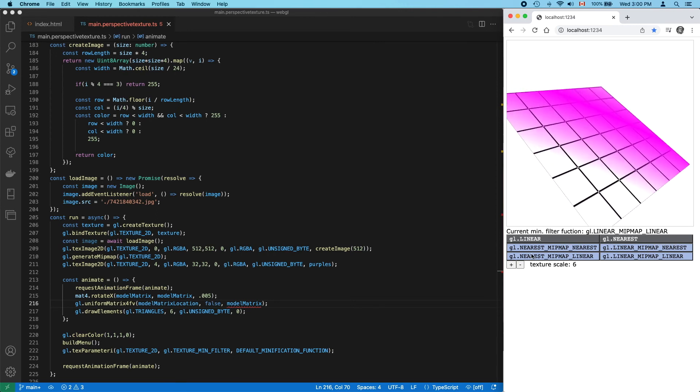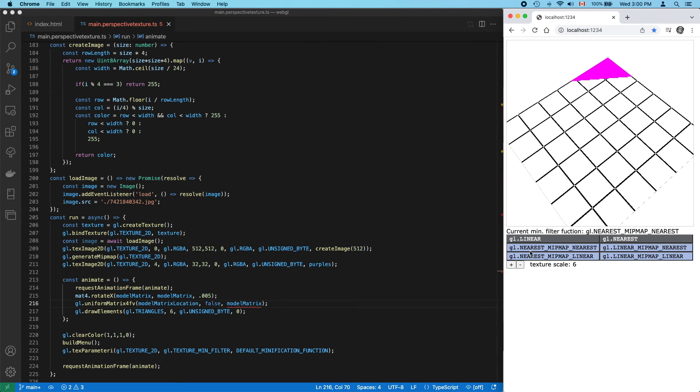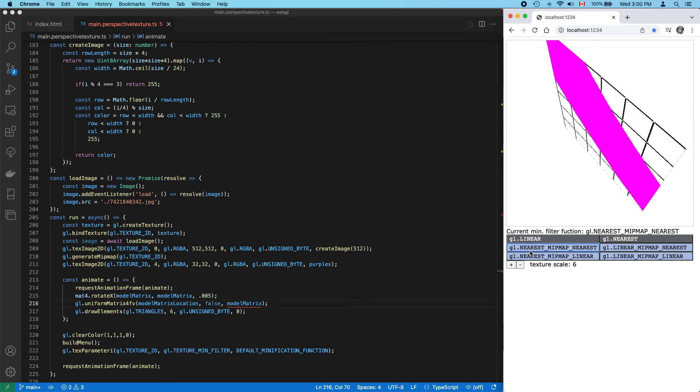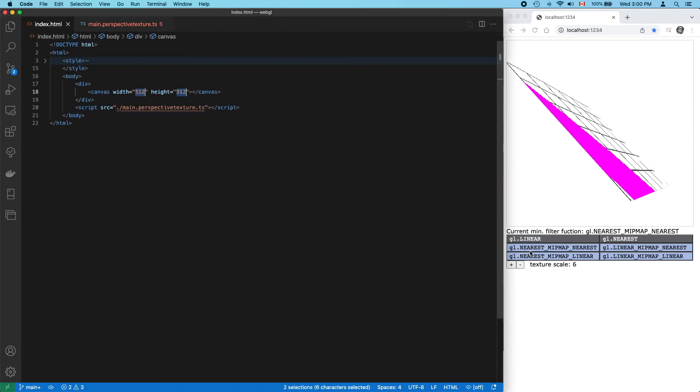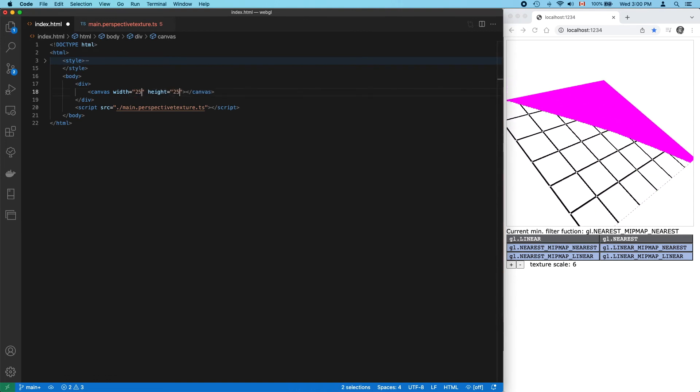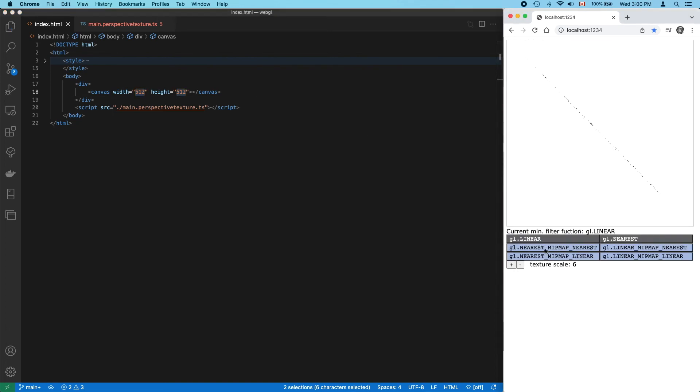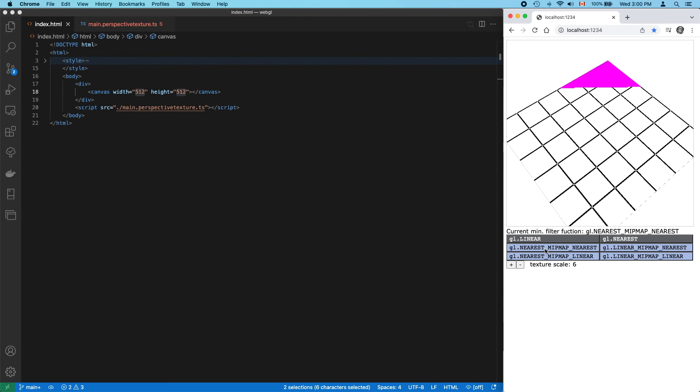One thing I really want to point out here. Notice here how the purple texels never take up more than 50% of the final render. Now let's try this again, but with a smaller canvas. Everything else will be the same. Now, the entire canvas is covered by level 4 texels. Unless you're building something for a very specific piece of hardware, like maybe a kiosk, never assume that what you see on your monitor will be the same as what someone sees on theirs. And this is especially true for mobile devices. When in doubt, test everything.